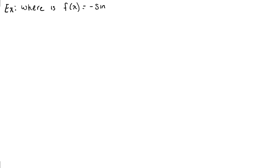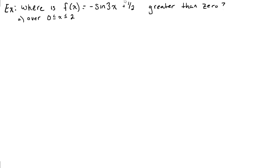So let's say that we have the following function. We have negative sine of 3x plus 1/2, and we want to know where this function is greater than 0 — or where is this function positive. We're going to write our answers looking at two different domains: one where x is between 0 and 2π, and then also from negative infinity to positive infinity, so we can compare what those answers look like and what changes.